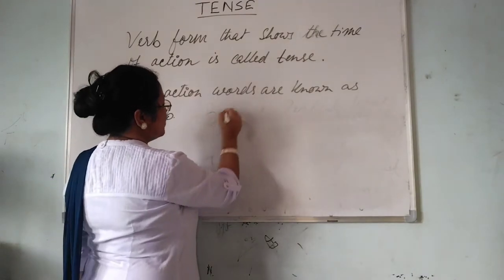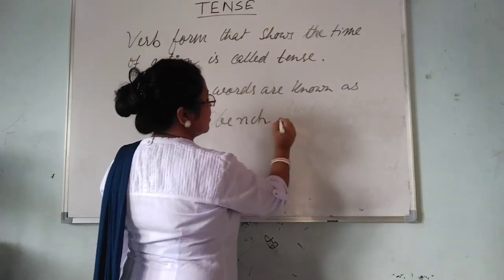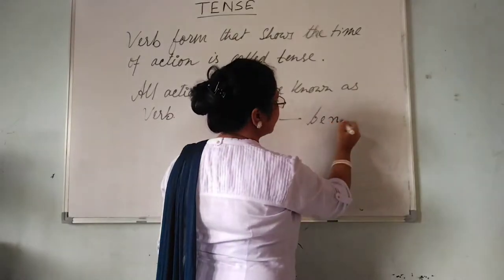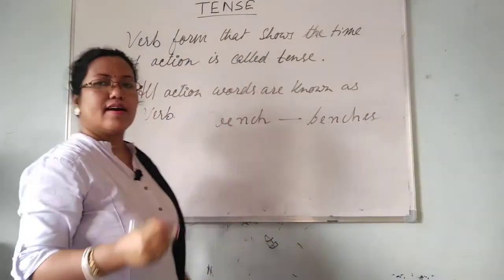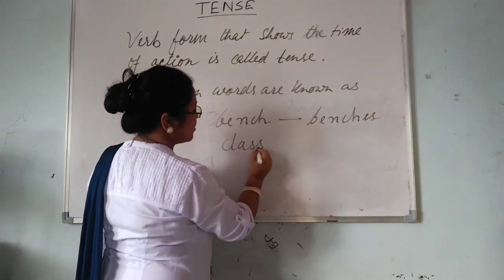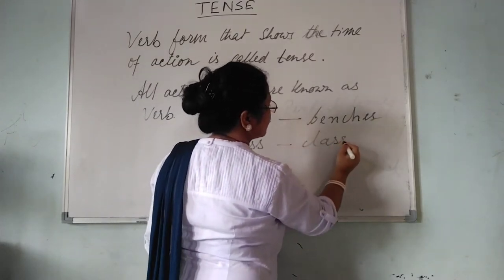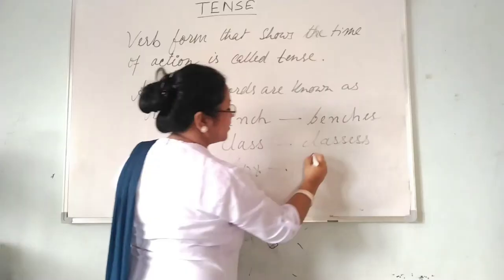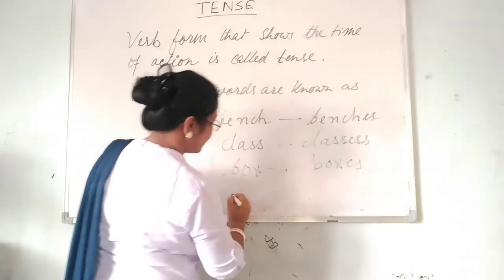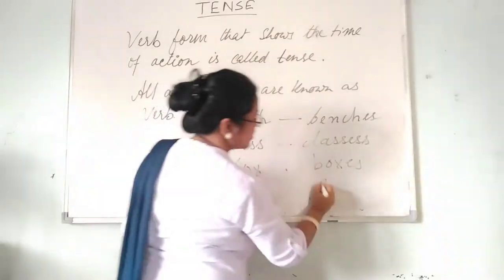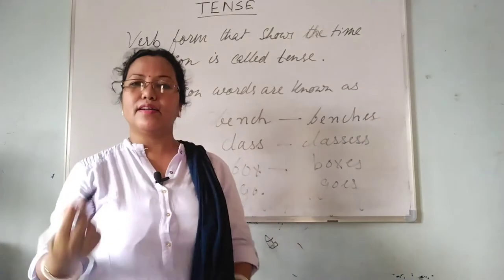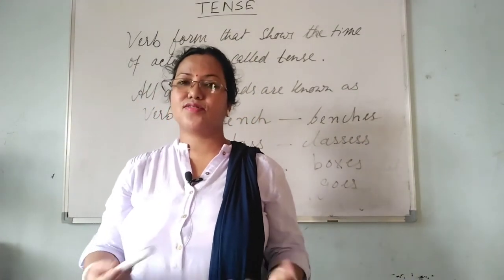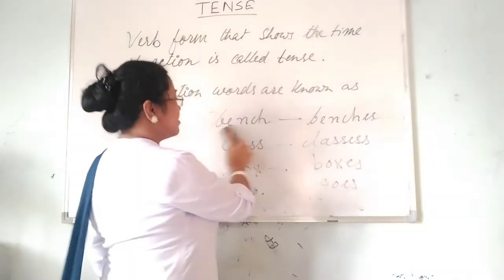For example, 'bench' becomes 'benches', 'class' becomes 'classes' because the word ends with SS, 'box' becomes 'boxes' because it ends with X, and 'go' becomes 'goes' because it ends with O. In case of other words which end with consonants, you have to use only S — like tables, stairs, chairs, fans. These are the things you have to remember.